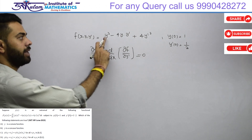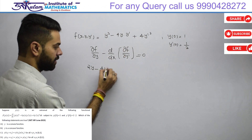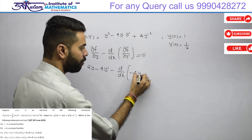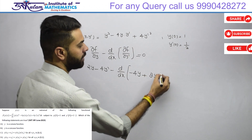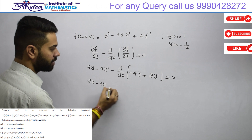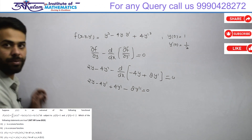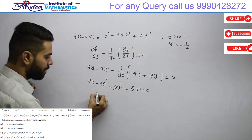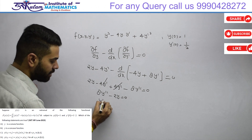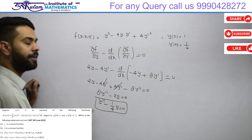यहाँ से ∂f/∂y find करूँ तो 2y - 4y' मिलेगा, minus derivative of ∂f/∂y' find करेंगे तो minus 4y plus 8y' equal to 0। Simplify करने पर: 2y - 4y' + 4y' - 8y'' = 0, जिससे 4y' cancel हो जाते हैं और मिलता है 8y'' - 2y = 0, यानी y'' - (1/4)y = 0।